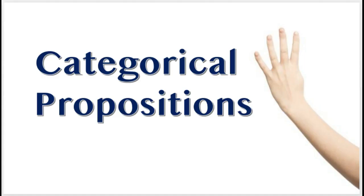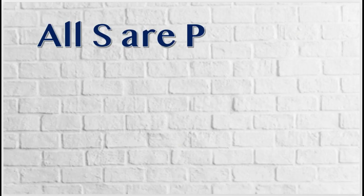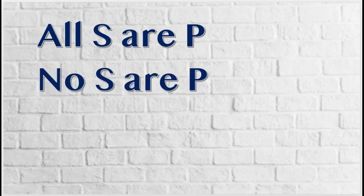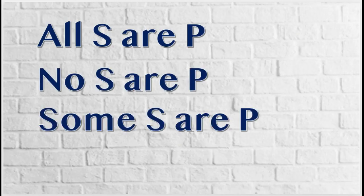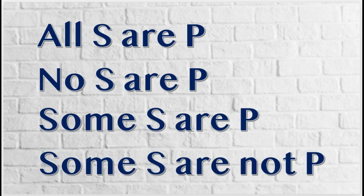If the new vocabulary has confused you, don't worry. Just stay focused and we'll get through this. Categorical propositions have these four forms: All S are P. No S are P. Some S are P. Some S are not P.